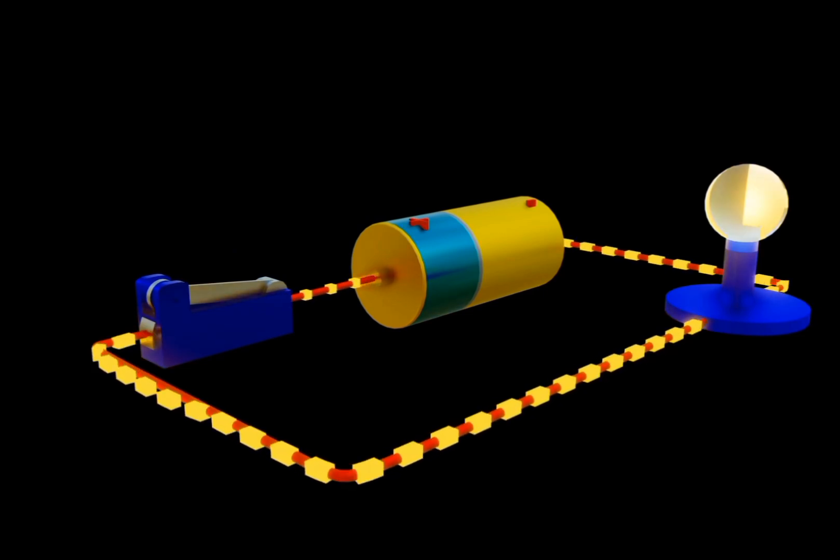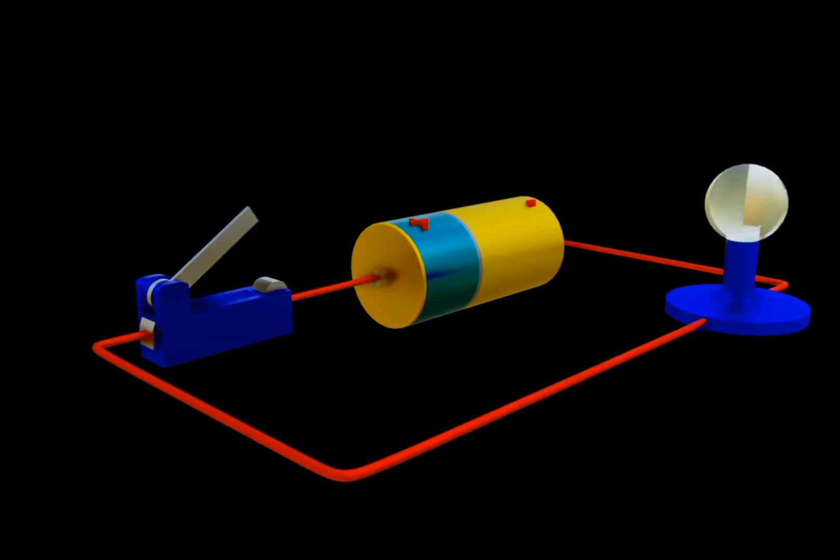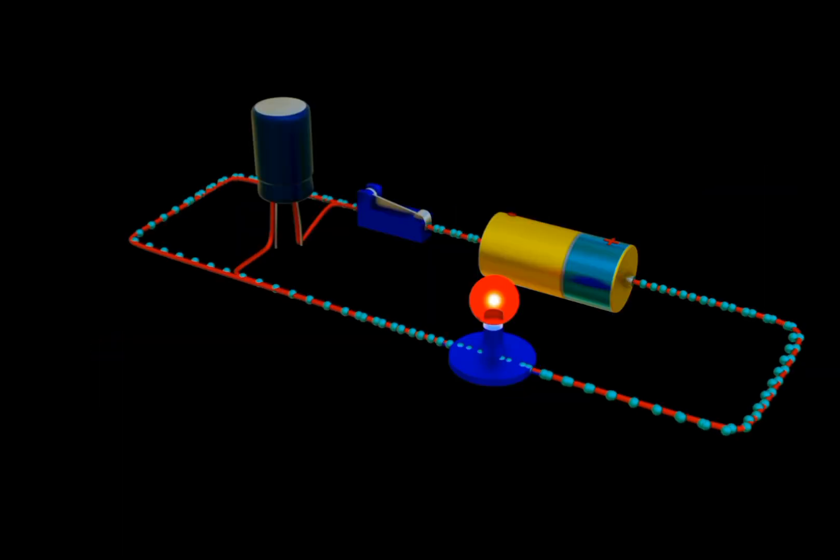As indicated, you should note that current flows from positive to negative, while electrons move from negative to positive.